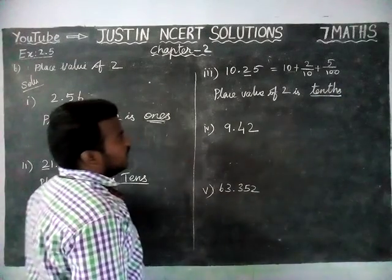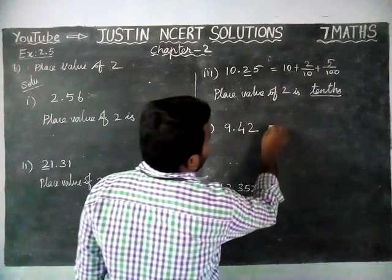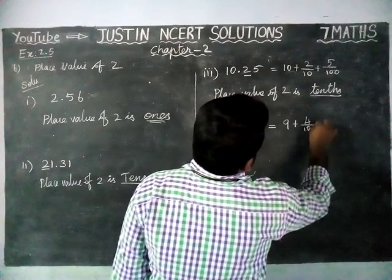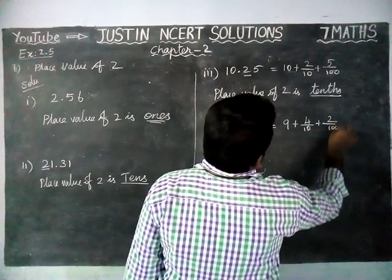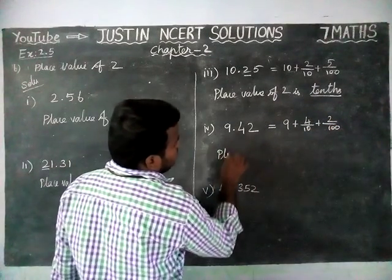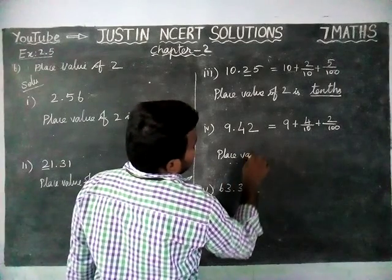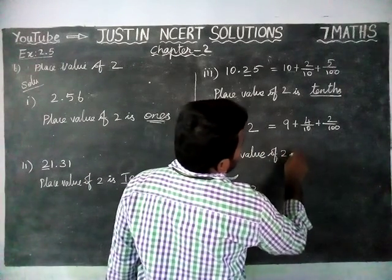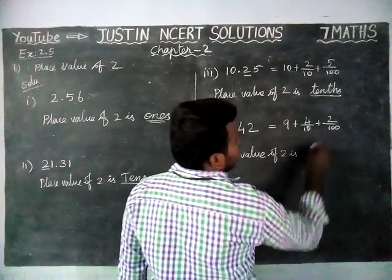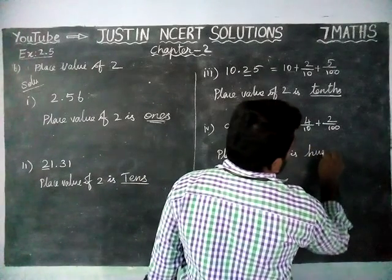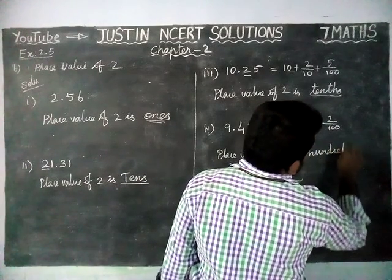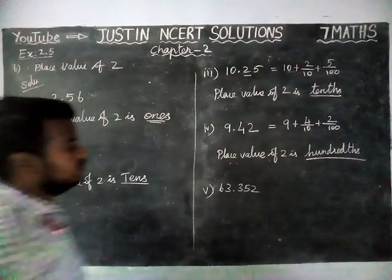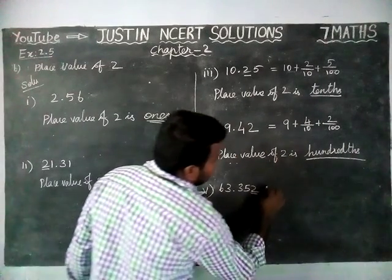And then, 9.42 can be written as 9 plus 4 by 10 plus 2 by 100. Here, place value of 2 is 2 by 100, so this is 100ths place.